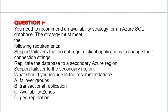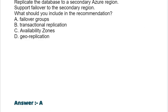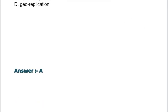Option A: Failover Groups. Option B: Transactional Replication. Option C: Availability Zones. Option D: Geo Replication. The correct answer is option A.